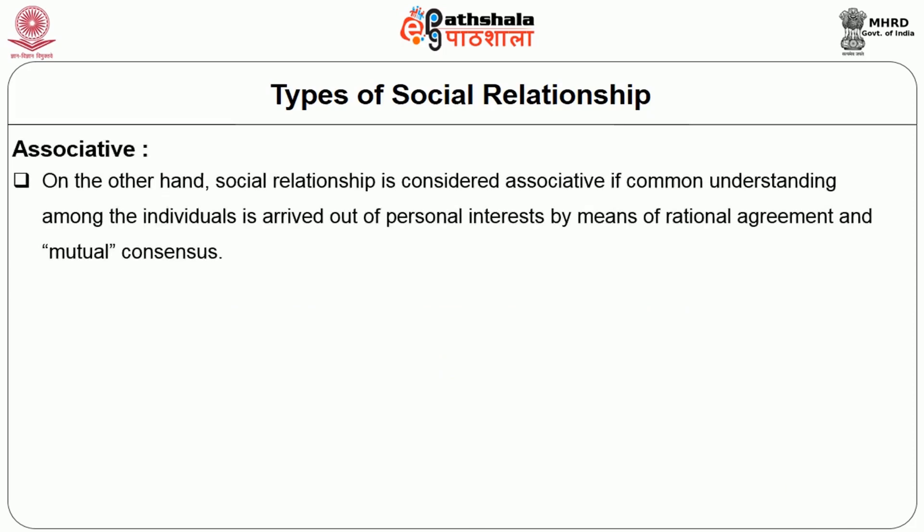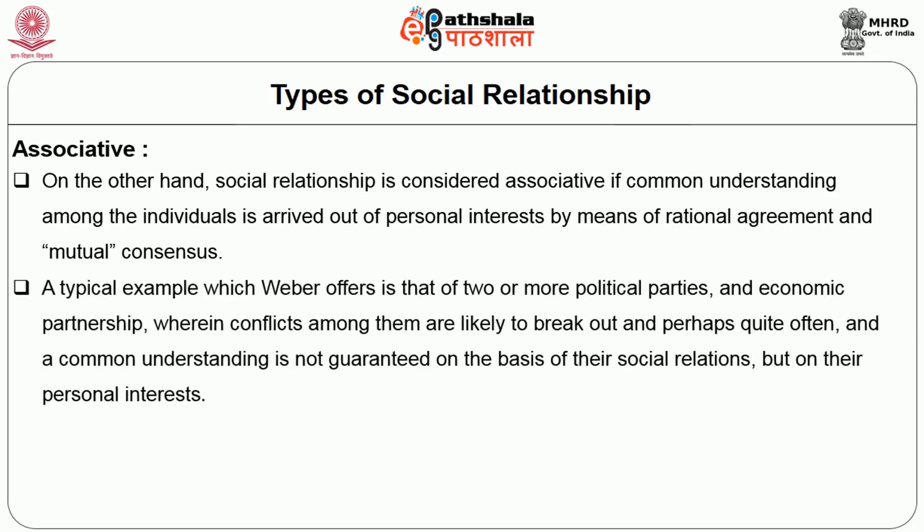On the other hand, social relationship is considered associative if common understanding among individuals is carried out of personal interest by means of rational agreement and mutual consensus. A typical example Weber offers is that of two or more political parties and economic partnerships, wherein conflicts among them are likely to break out quite often and common understanding is not guaranteed on the basis of the social relationships but on personal interests. Here, more than love or affection, the relationship is basically rooted in rational reason — say, for instance, rules or laws.